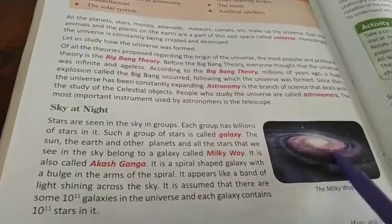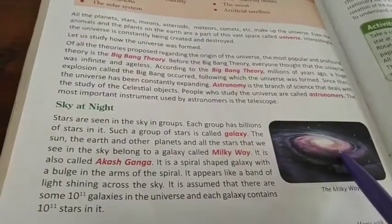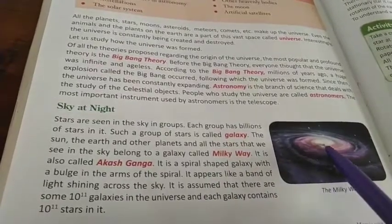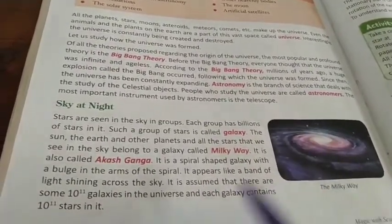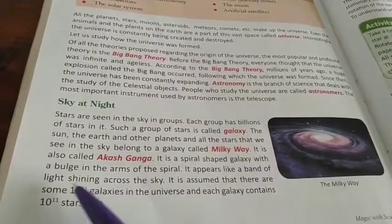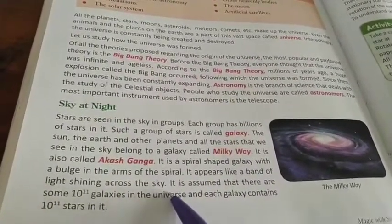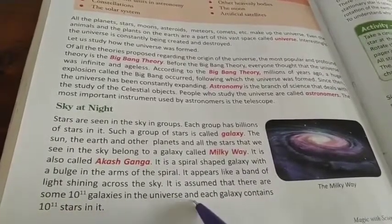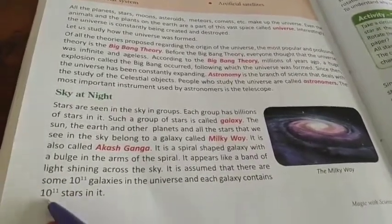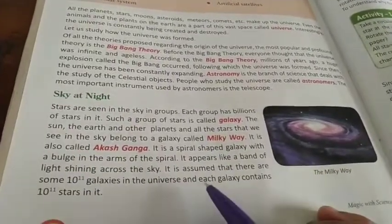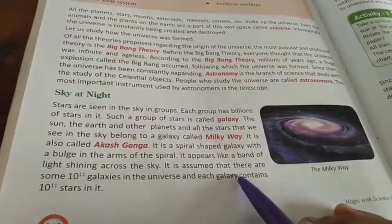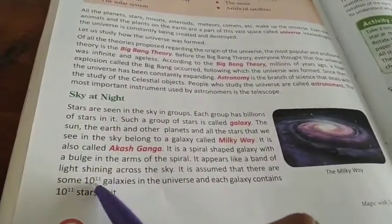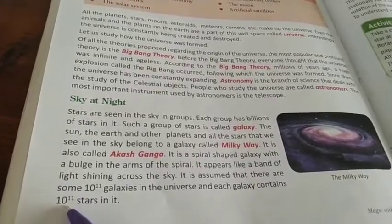As you can see in this diagram, our Milky Way Galaxy is a spiral-shaped galaxy. It appears like a band of light shining across the sky. It is assumed that there are about 10 to the power 11 galaxies in the universe, and each galaxy contains 10 to the power 11 stars in it.